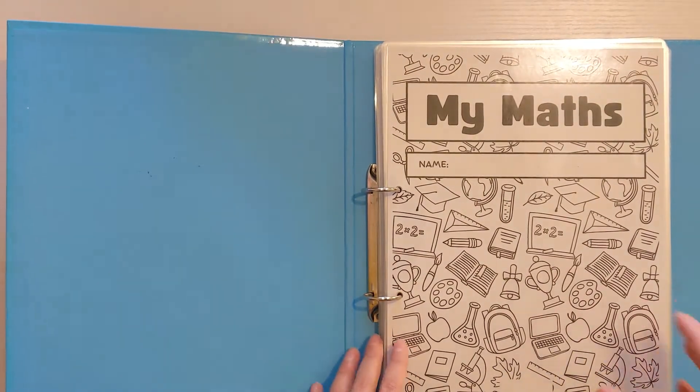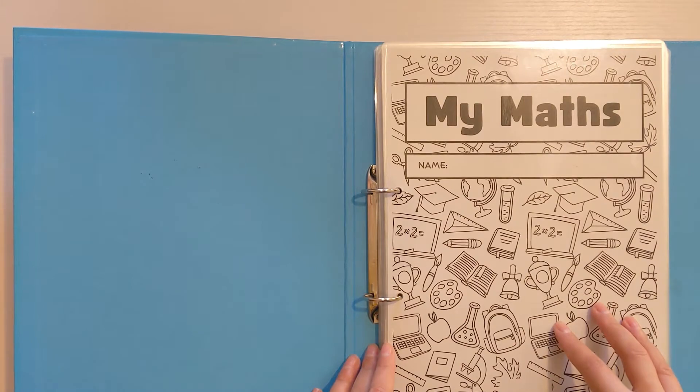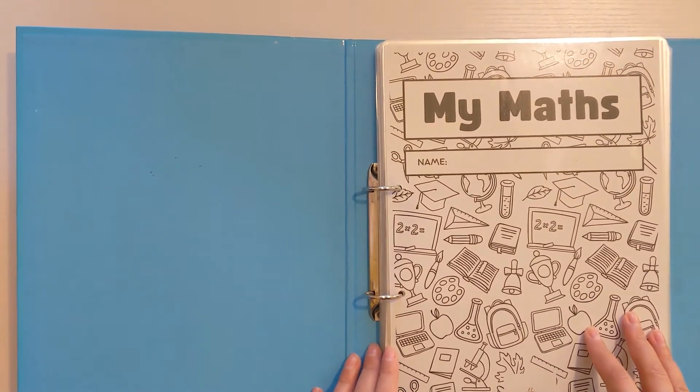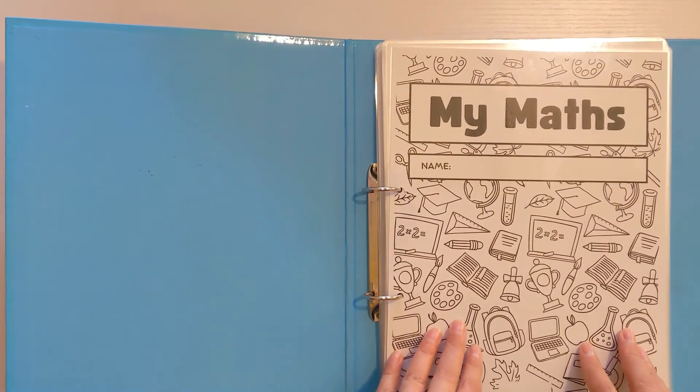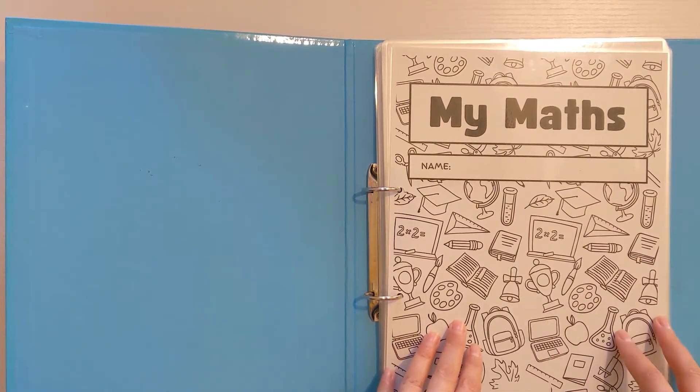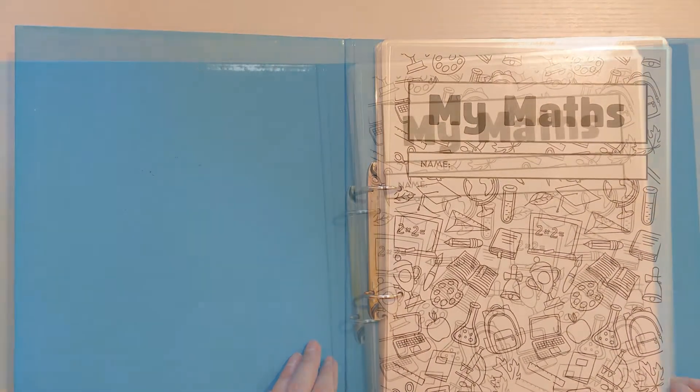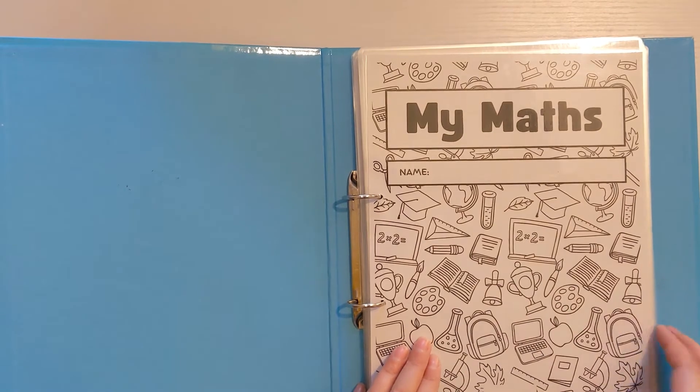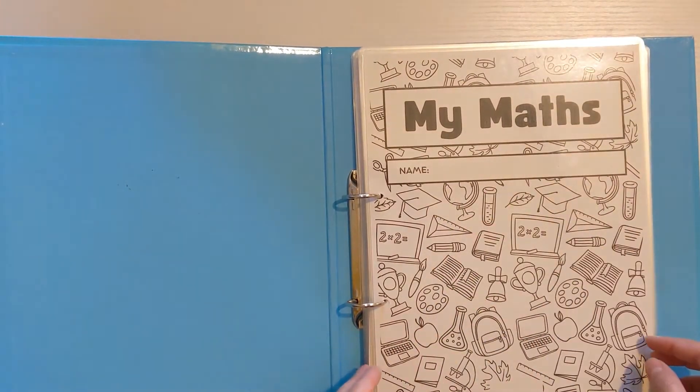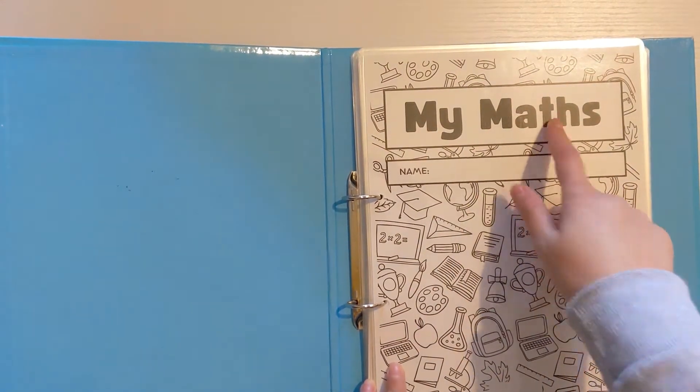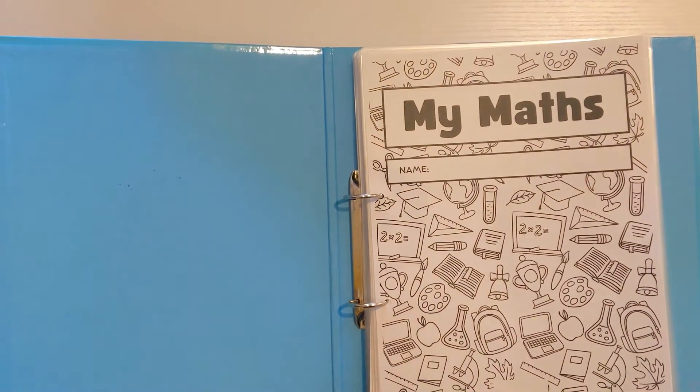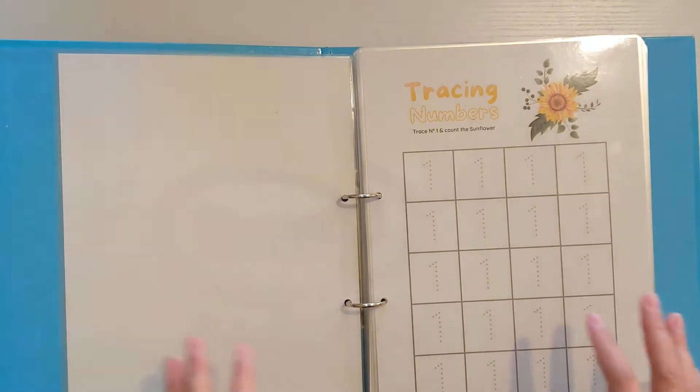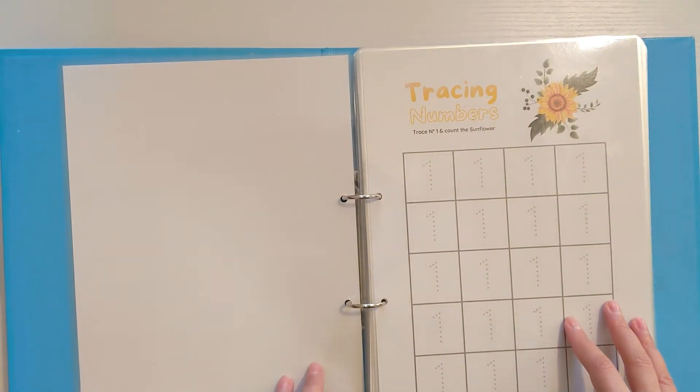I've printed off lots of sheets which are really age appropriate and in line with the EYFS. If you live in the United Kingdom, that's the Early Years Foundation Stage curriculum which children access when they're at nursery and when they go into reception. I've made her a really nice cover. I've laminated it. She'll put her name here so she can see the word Maths and familiarize herself with that vocabulary every day.